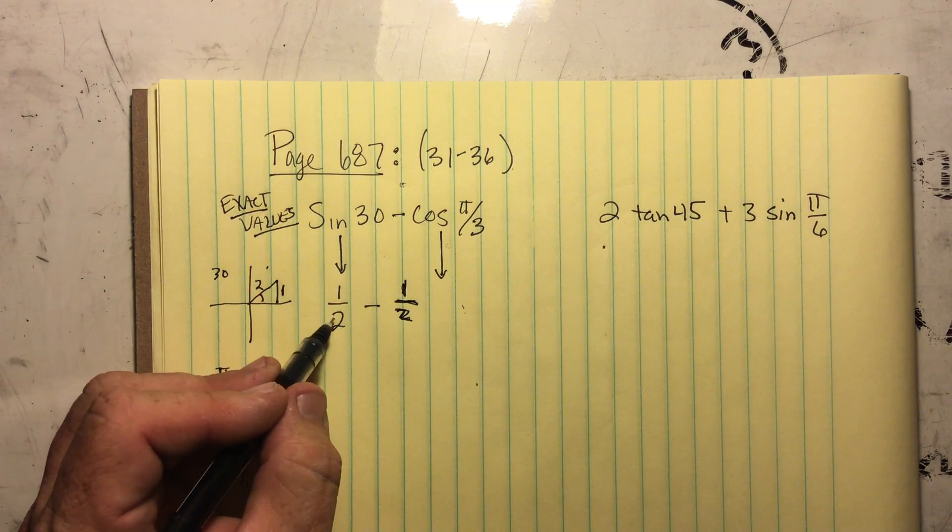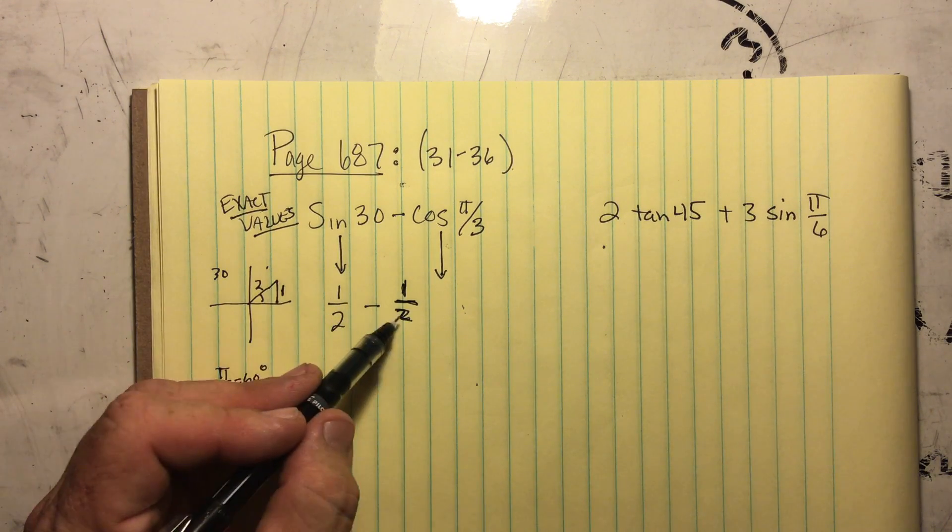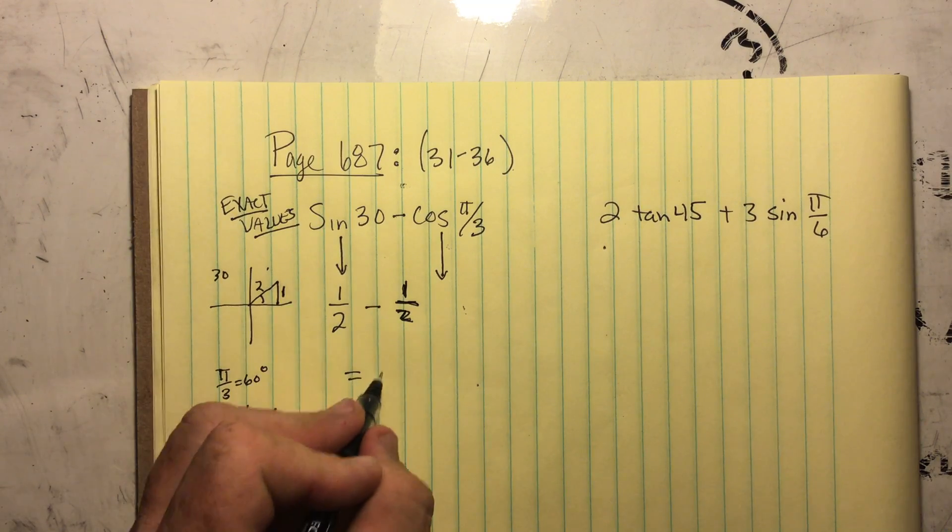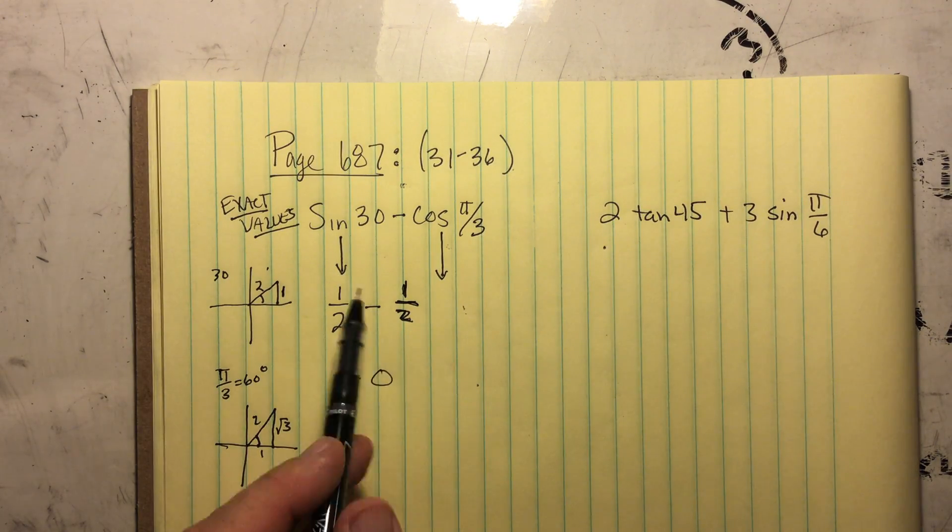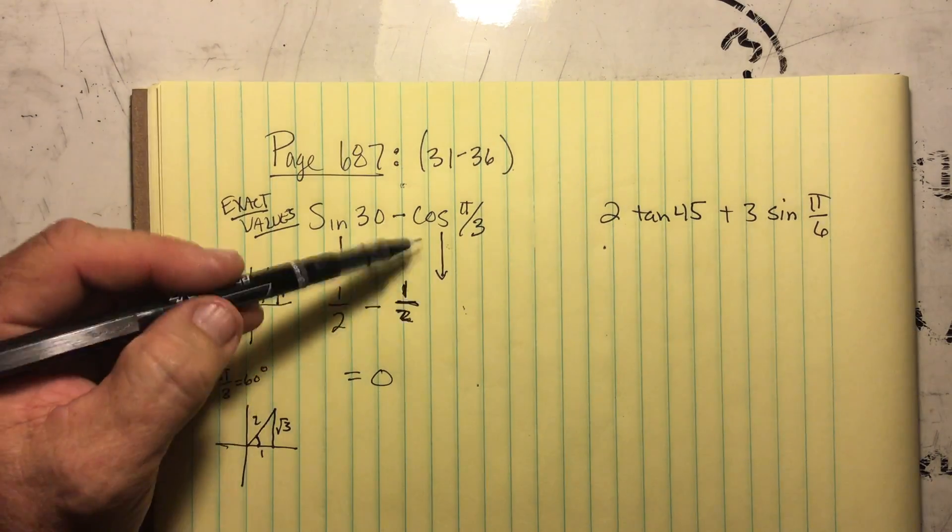So 1 half minus 1 half is going to equal 0. So my answer will be 0 because I'm just subtracting fractions. The biggest thing is you've got to convert these.